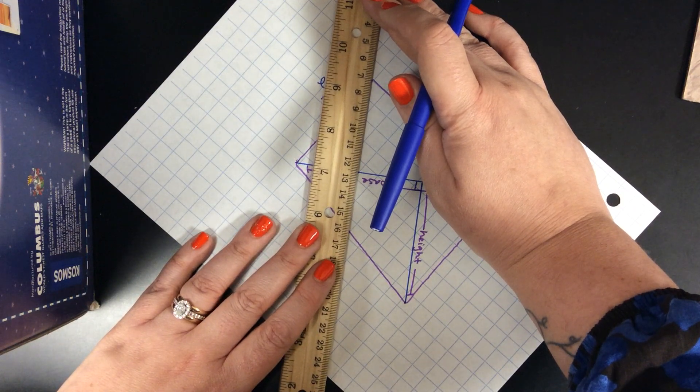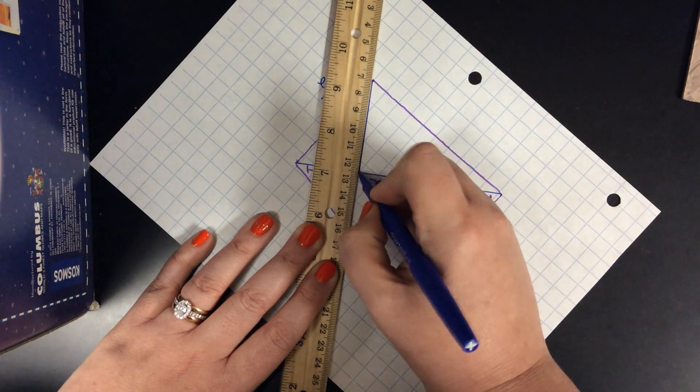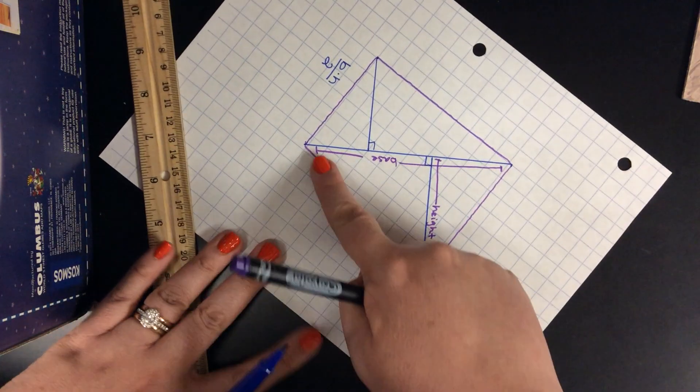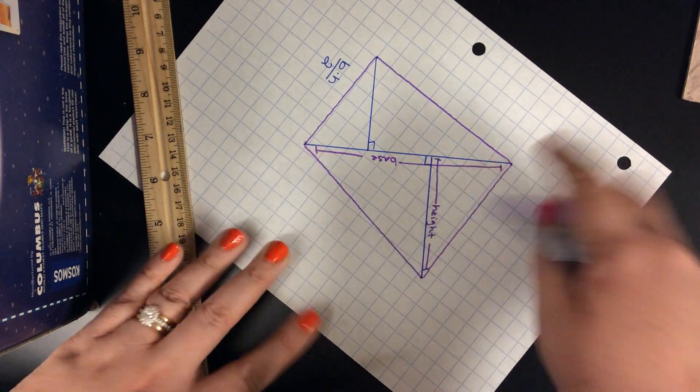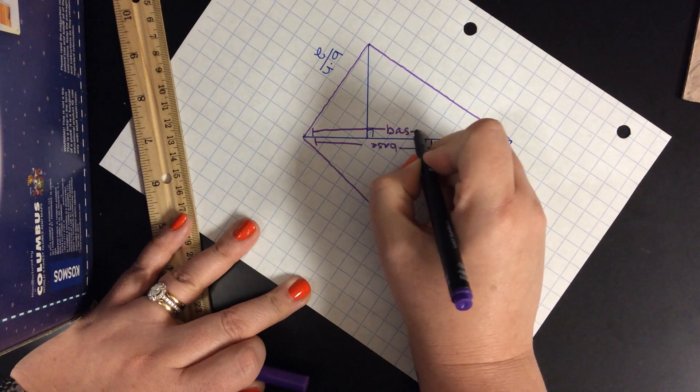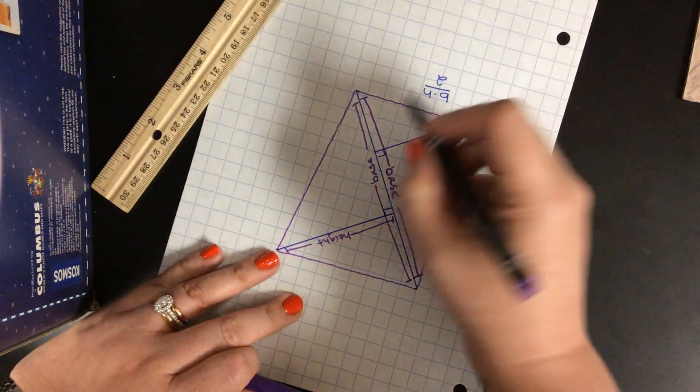So I'm going to line up my ruler, I'm going to draw in my line. This same center division is still my base for the second triangle, and this is my height for the second triangle.